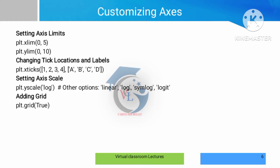To customize the axis, we can set the x-axis limit from 0 to 5 and the y-axis limit from 0 to 10. By setting these ranges, the limit changes accordingly. Tick locations can be set at positions 1, 2, 3, 4 — these are the major ticks. Tick labels can be A, B, C, D. Next, we can set the y-axis scale, and use grid=True to display the grid.